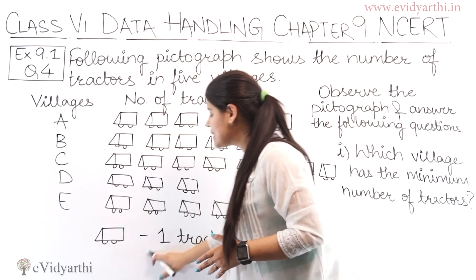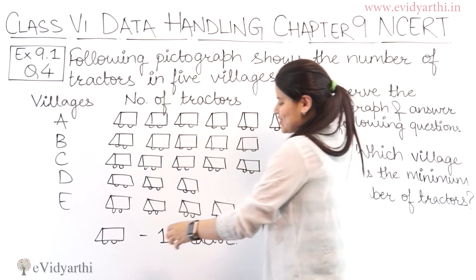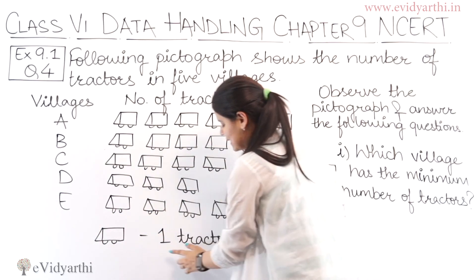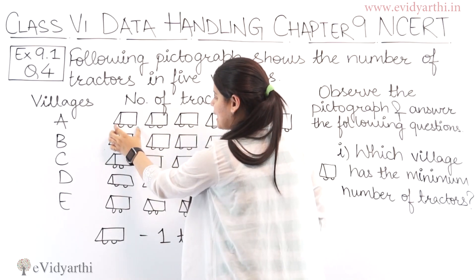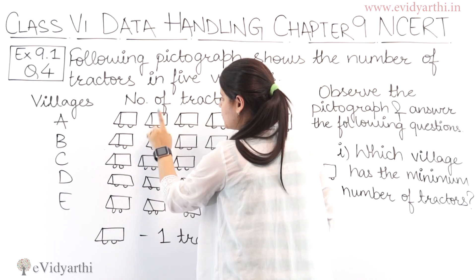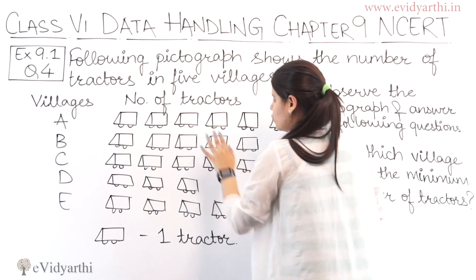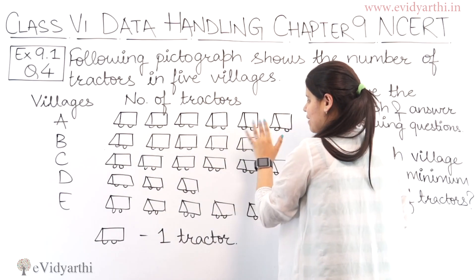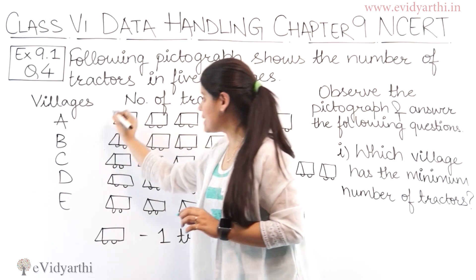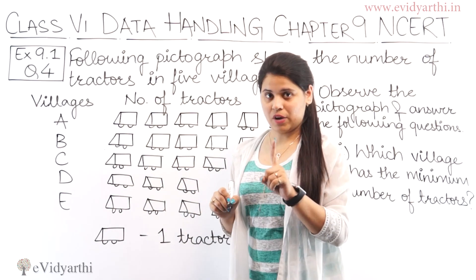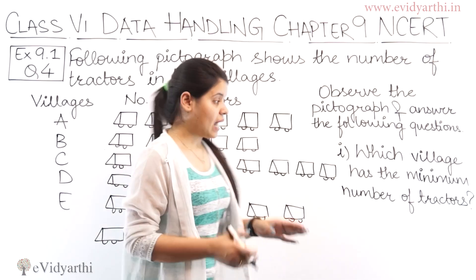It is given that this one tractor symbol represents one tractor. So if there is one symbol, it means one tractor; two symbols means two tractors; three means three; four means four; five means five; and six means six tractors. So this is our pictograph.